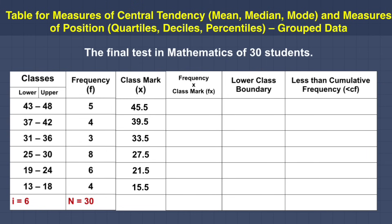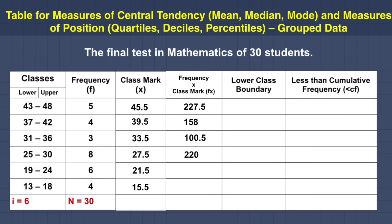Complete the fx column — frequency times class mark. Starting from the top: 5 times 45.5 equals 227.5; 4 times 39.5 equals 158; 3 times 33.5 equals 100.5; 8 times 27.5 equals 220; 6 times 21.5 equals 129; and 4 times 15.5 equals 62. Adding the entire fx column gives a total of 897.